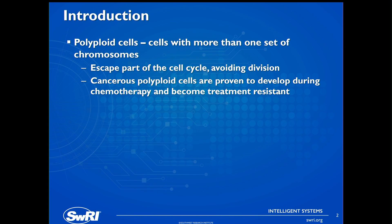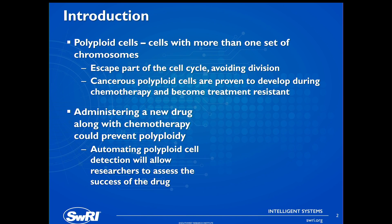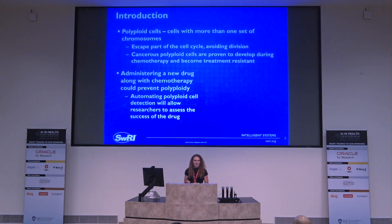Researchers have recently found that cancerous polyploid cells can be formed during chemotherapy. So it's necessary for drug developers to develop drugs to administer along with chemotherapy to prevent the production of polyploid cells. And where I step in is automating the identification of polyploid cells.